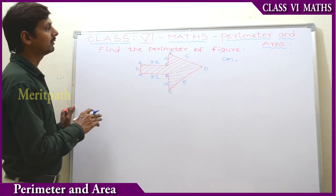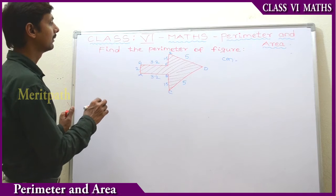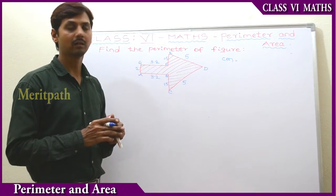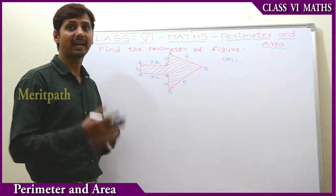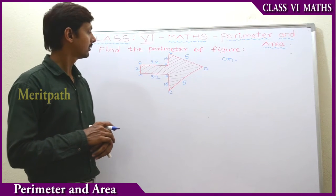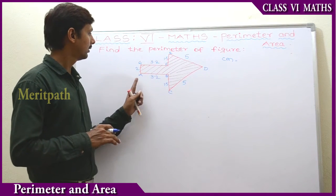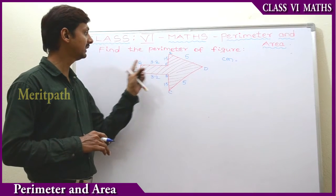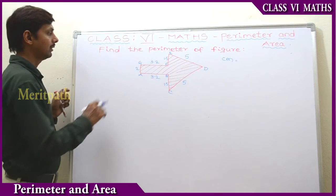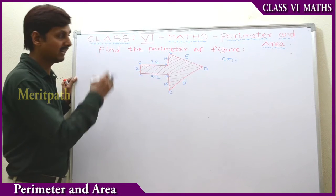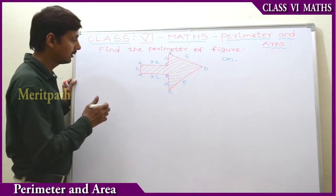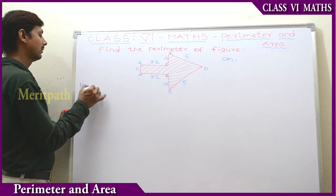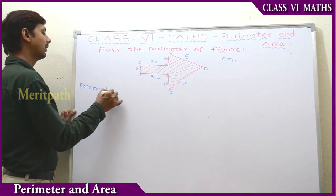Let's find out the perimeter of this figure. To find the perimeter of this figure, we need to add all the sides. So we have taken some names: A, B, C, D, E, F, G. And to find the perimeter, we need to add all the sides of it. So let's find out the perimeter of this figure.